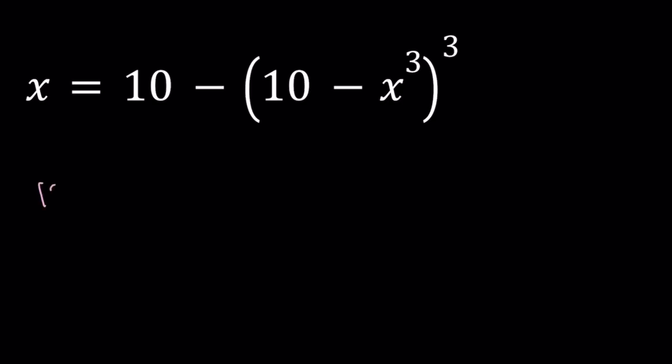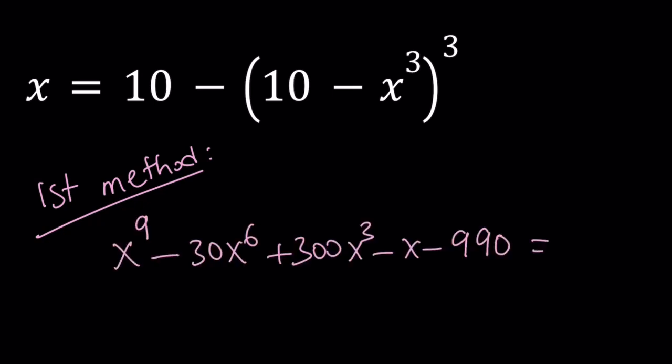So let's start talking about the first method. For my first method, I want to just go ahead and expand everything. To keep a long story short, if you do that, you're going to get this nonic equation, and then you're like, uh-oh, we have to use the nonic formula. But it does not exist. Too bad. So we have to do something else.